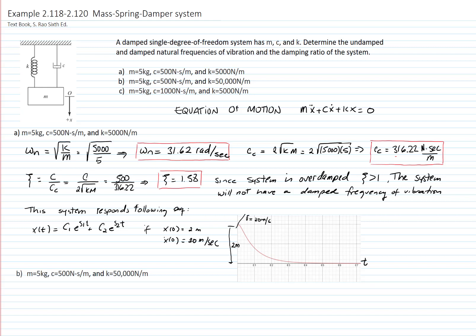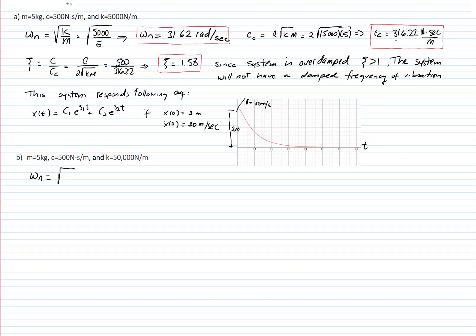The next problem that we will solve will be mass 5 kilograms, damping 500 newton seconds over meter, and constant of the spring 50,000 newtons over meter. Let's start by calculating our natural frequency, which is the square root of k over m. Right now we have k is 50,000 divided by 5, our mass, and that gives us a natural frequency of 100 radians over second.